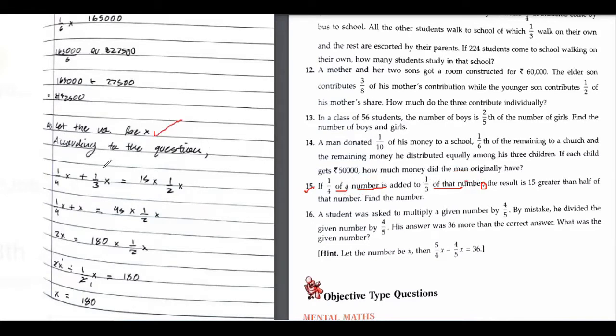So let the number be x. According to the question, one fourth of a number - that means of means multiplication. One fourth of a number, this part is correct, is added to one third of that number. So this part is also correct.